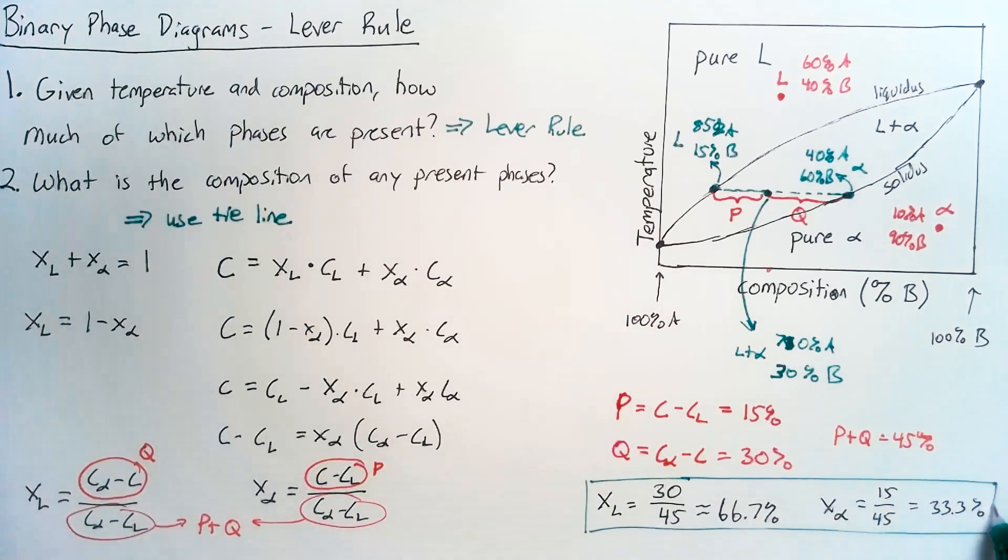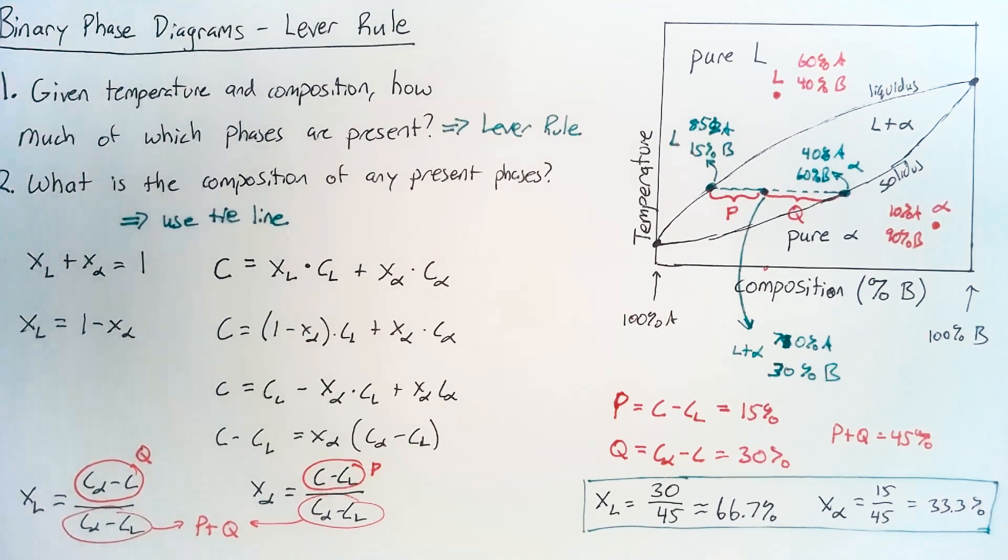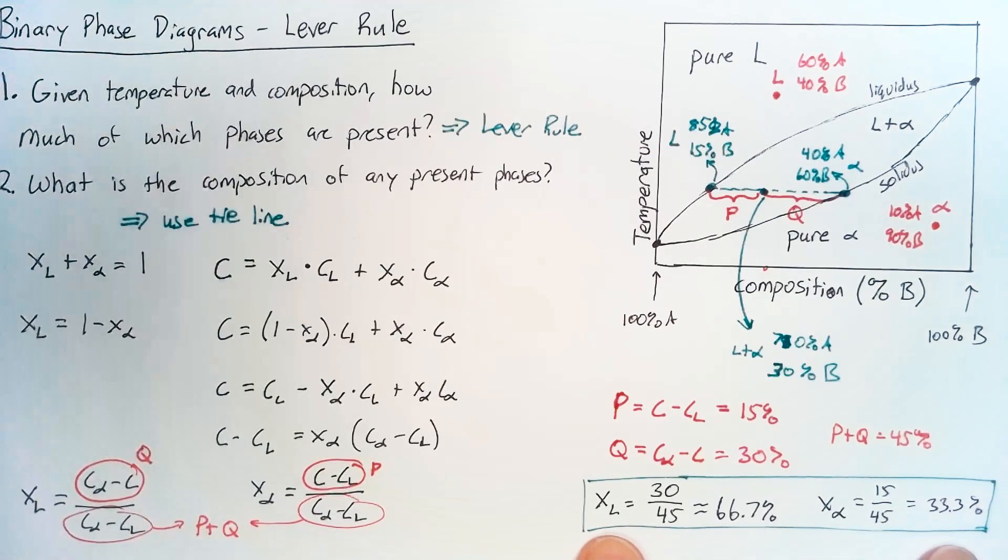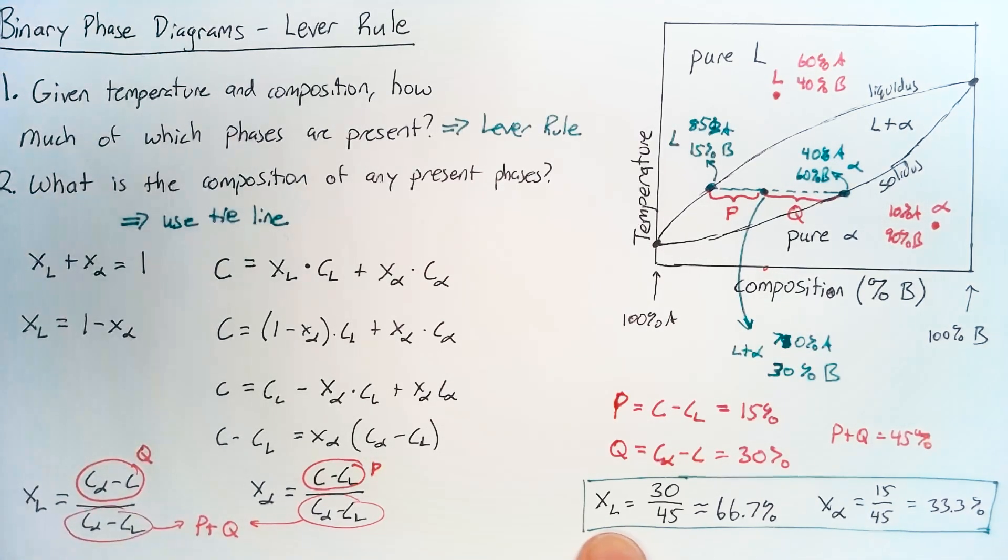And that is what question one was asking. How much of which phases are present? And this says that the phases present are liquid and alpha. It's two thirds liquid, one third alpha. And so we're done.